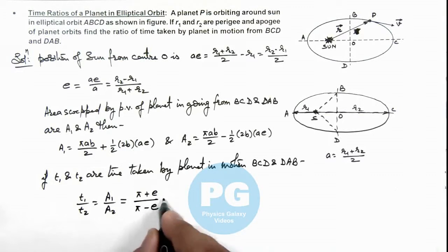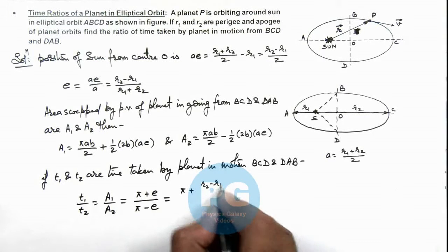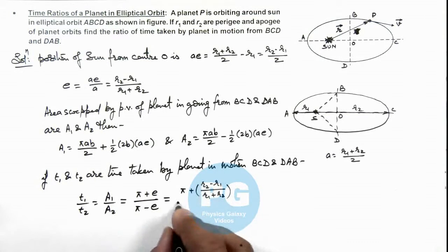So if we substitute the value of eccentricity which we obtained, this will be π plus r2 minus r1 upon r1 plus r2, divided by π minus r2 minus r1 upon r1 plus r2.